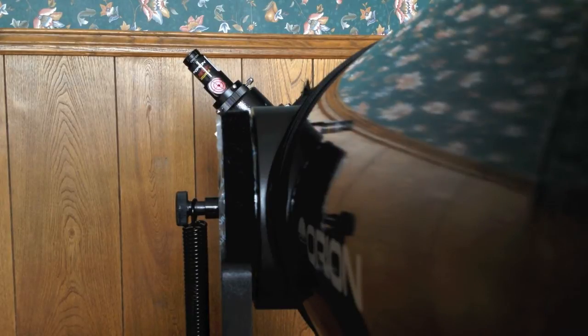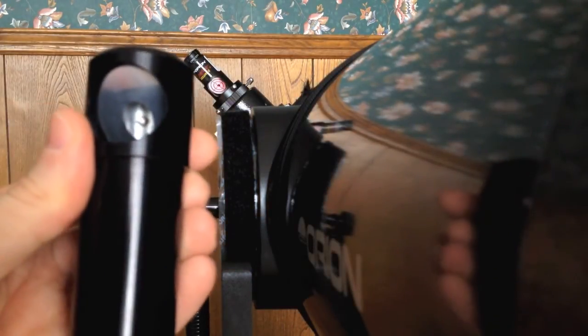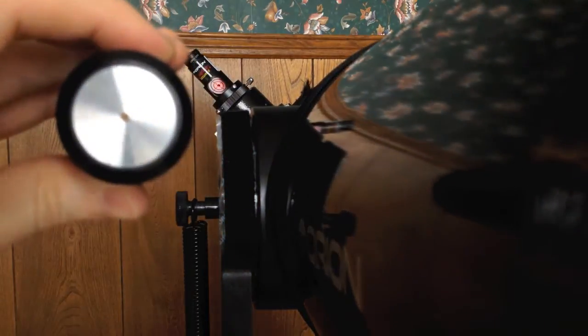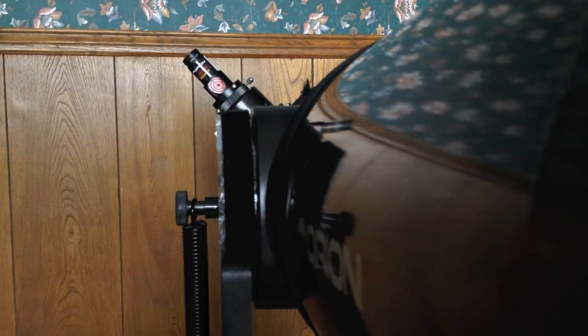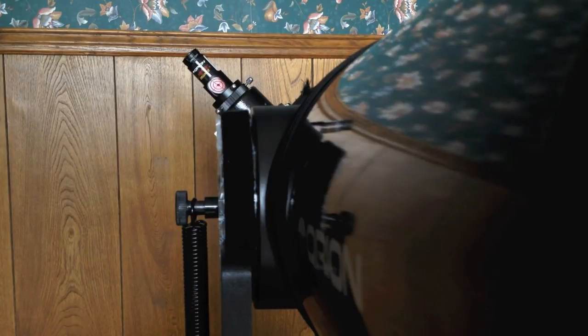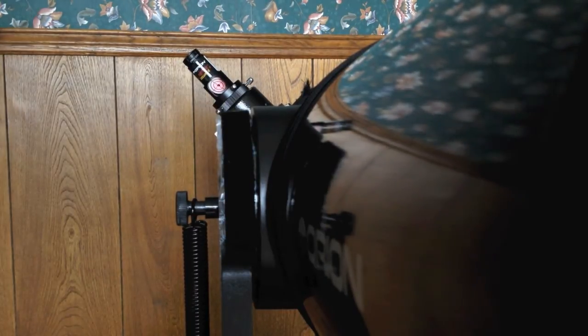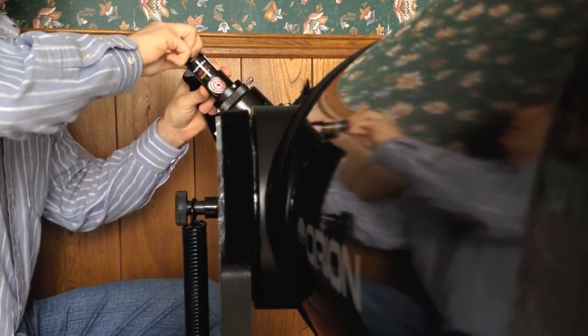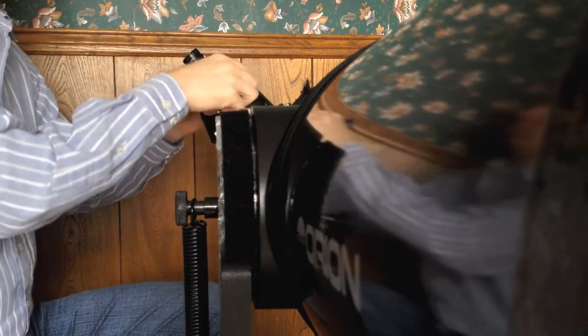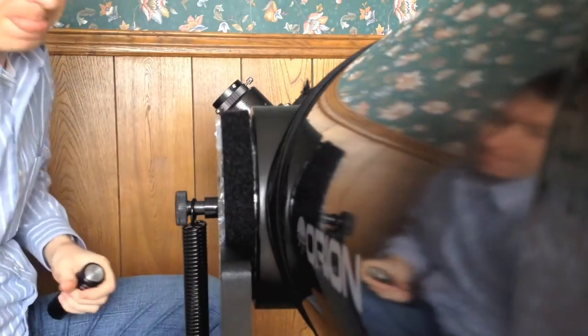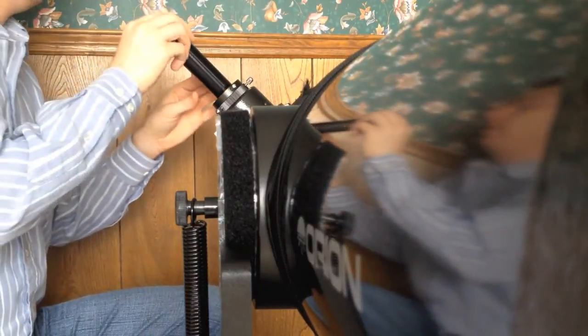If you want to check your work, you pull out a Cheshire. Look down the Cheshire and check your crosshairs and your center dot. So all you have to do is turn off the collimator, pull it out, put your Cheshire in.